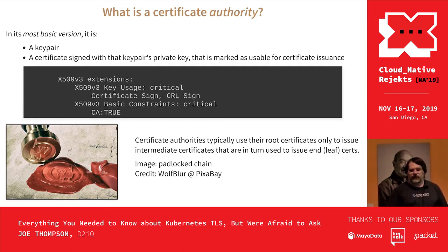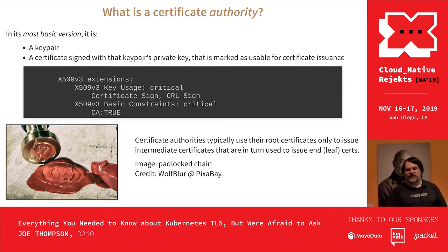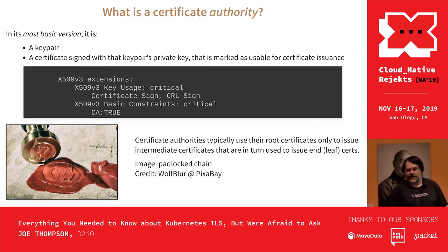What is a certificate authority? It's a key pair and a certificate — that's what a CA is in its most primitive form. That's all you need to operate as your own CA. There's more stuff CAs are typically expected to manage, like certificate revocation lists and transparency logs, but they're not technically necessary just to issue certificates. What defines a CA is this basic constraint that says CA true. That's the only difference.